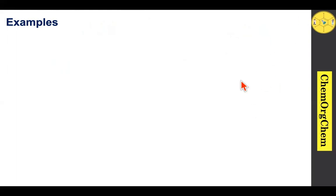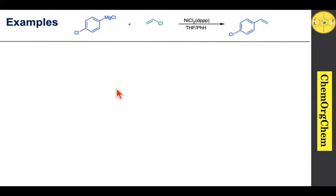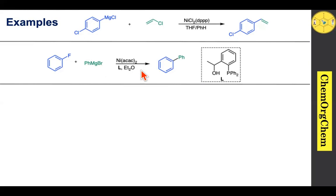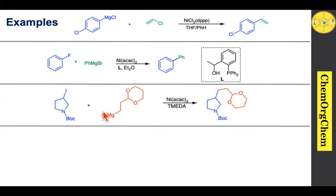Now let's look at examples using the nickel-based catalytic system. In the first example, a Grignard reagent reacts with vinyl chloride in the presence of a nickel catalyst to produce the carbon-carbon coupling product. In another example, fluorobenzene reacts with phenyl magnesium bromide using a nickel catalyst with a specific ligand to produce the coupling product. This is interesting because unlike other cross-couplings, here an organofluoride undergoes coupling using nickel catalysis.